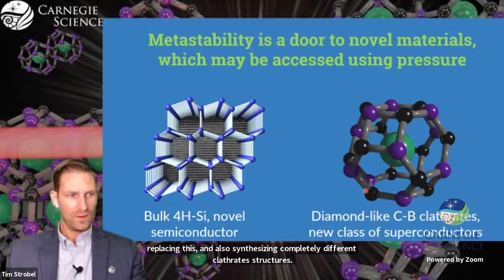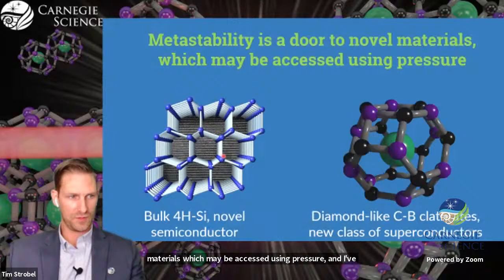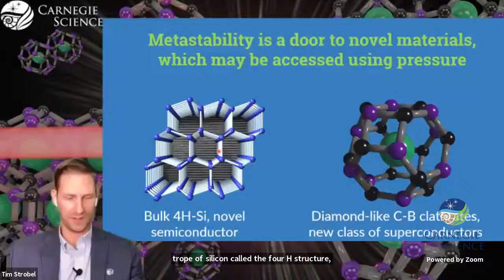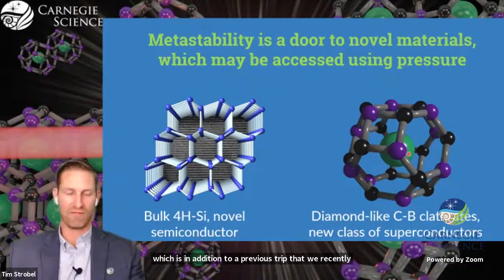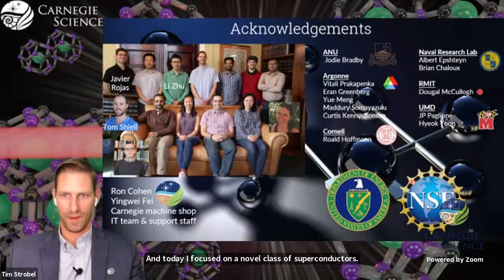So, in conclusion, I hope I've convinced you today that metastability really is a door to novel materials, which may be accessed using pressure. I've demonstrated these two examples of a novel allotrope of silicon called the 4H structure, and through our discovery of these diamond-like carbon-boron clathrates, which have many interesting properties, including high strength and hardness, and today I focused on a novel class of superconductors.